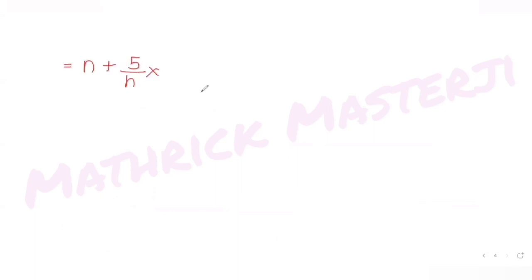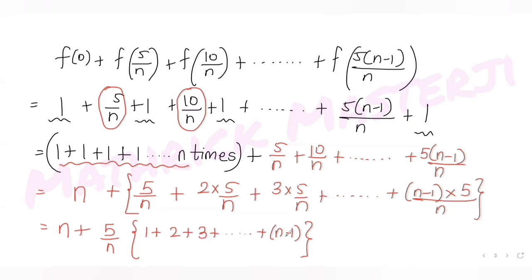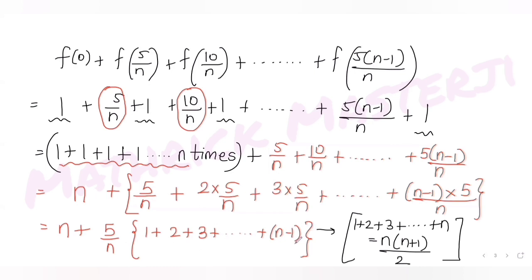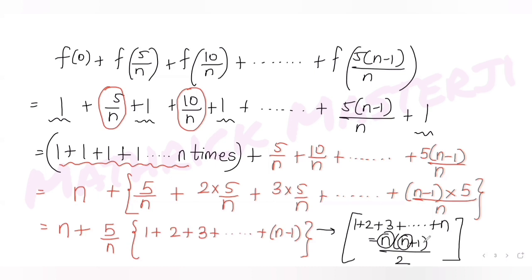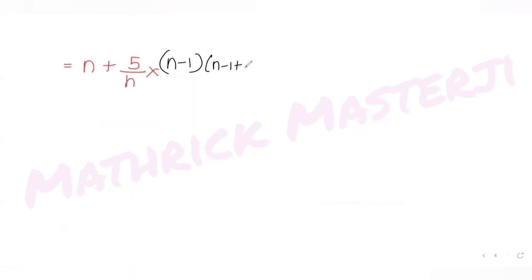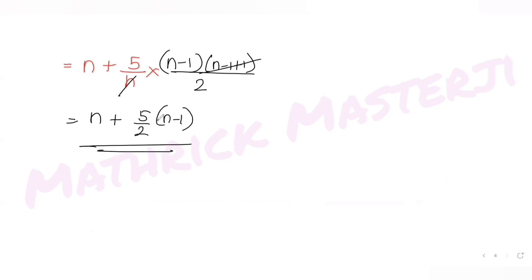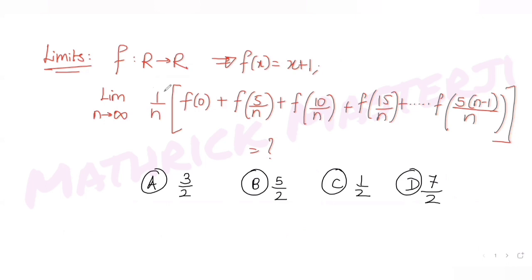So the total sum is n plus 5 over n times the series 1 plus 2 plus 3 up to n minus 1. We know that the sum of n natural numbers is n times n plus 1 divided by 2. Here we are adding n minus 1 terms, so we replace n with n minus 1, giving n minus 1 times n divided by 2. The n in the numerator and denominator cancel, leaving us with n plus 5 over 2 times n minus 1.